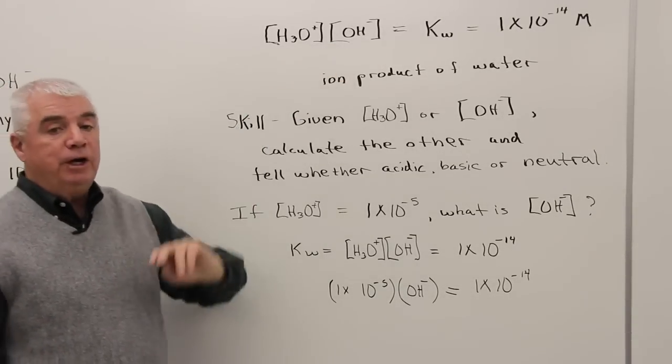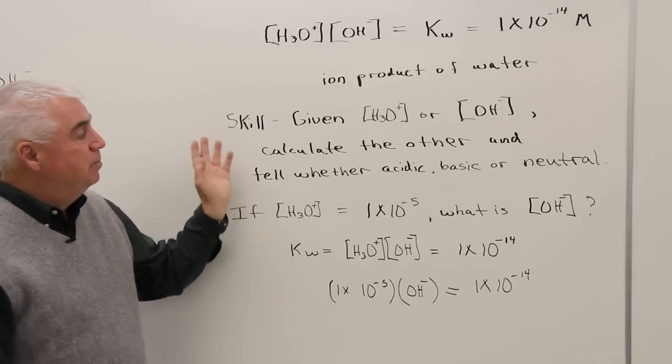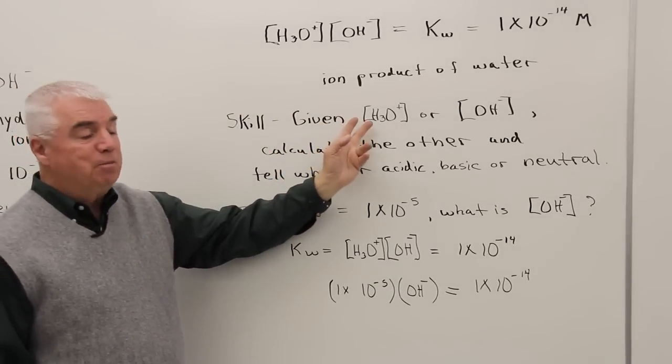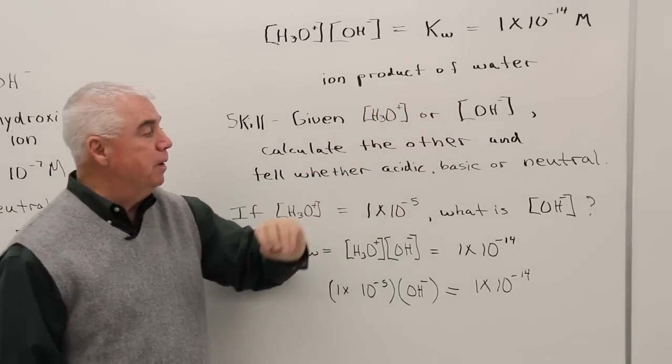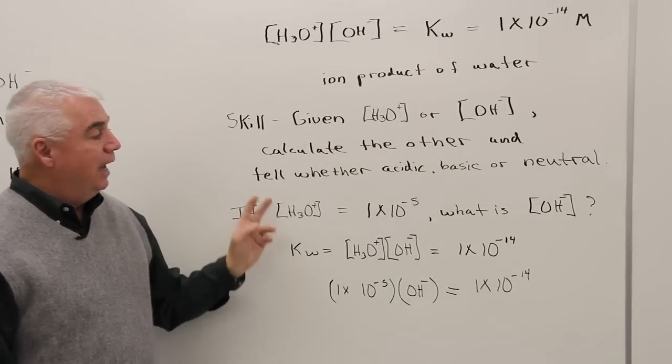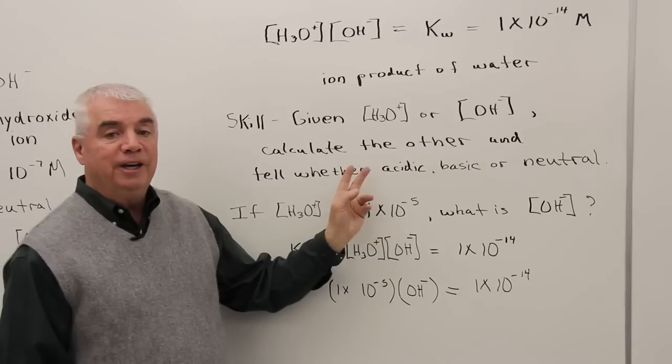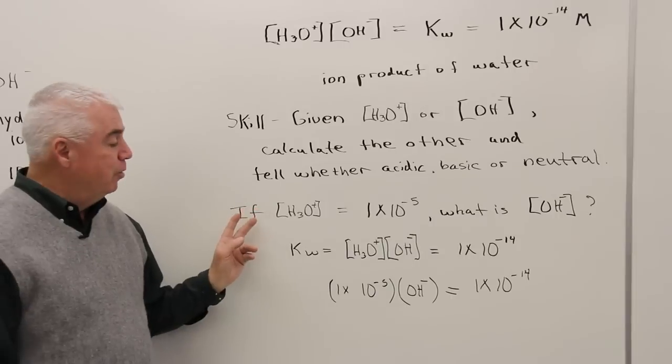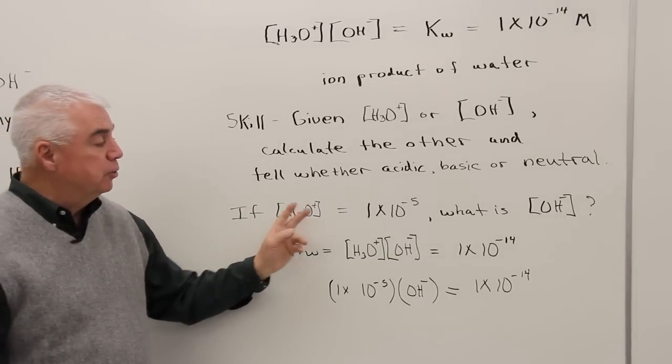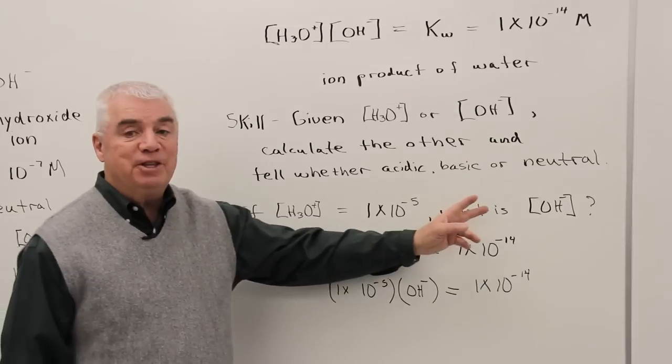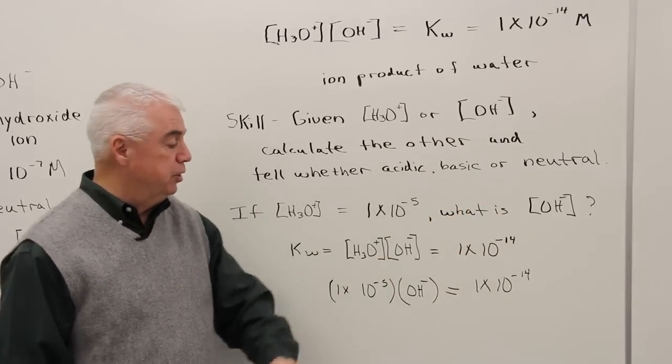Given an equation like this, it leads us to a skill that we'd like you to have. Given the H3O+ concentration, or OH-, we'd like you to be able to solve for the other and to tell whether the solution is acidic, basic, or neutral. For example, if we have an H3O+ concentration of 1 times 10 to the minus 5, what's the OH- concentration?